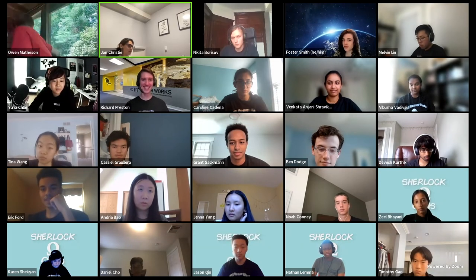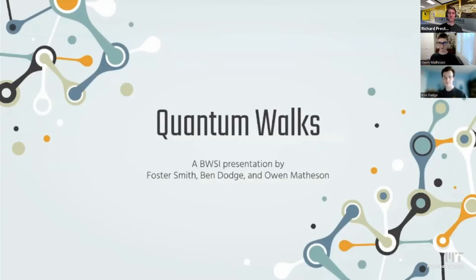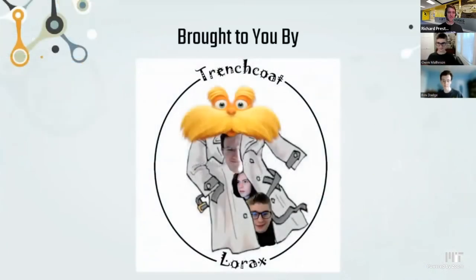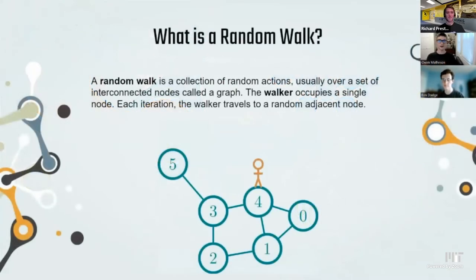Hello everyone, we are the Trenchcoat Loraxes, and we're going to be presenting about quantum walks. My name is Owen Matheson. I'm Ben Dodge. And I'm Foster Smith. Quantum walks are the quantum version of random walks. Random walks are when a walker takes random steps around a graph, jumping in a random direction from node to node every single iteration. Quantum walks are the quantum version of those: on a random walk, you're using normal bits that are zero or one. In quantum, those bits can be zero and one and everything in between.